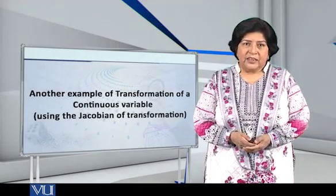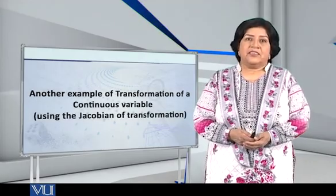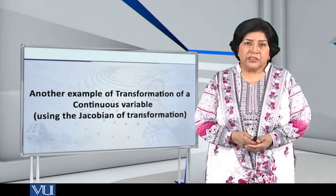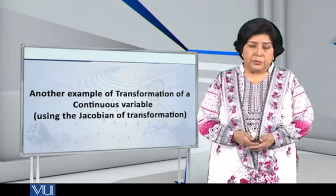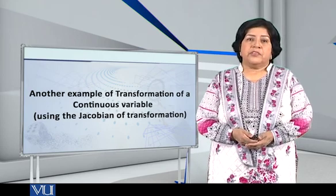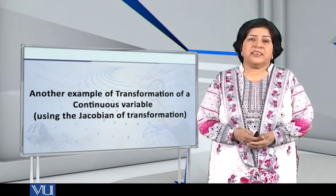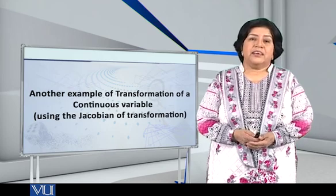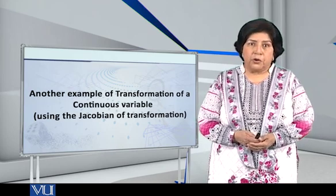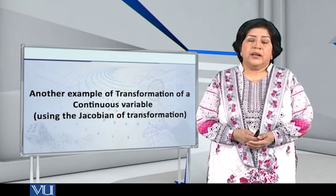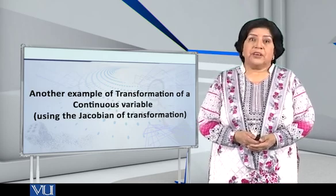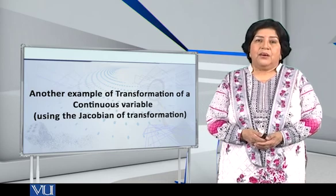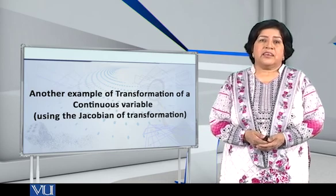Dear students, let me present to you an example of the transformation of a continuous variable using the Jacobian of transformation. I'm going to present a particular example in which a continuous uniform random variable is transformed to a Cauchy random variable. All right, so let us begin.